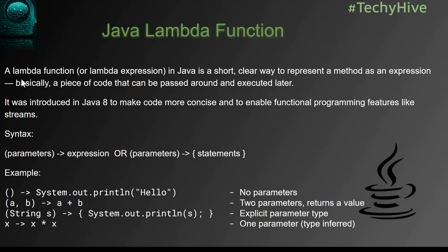A lambda function or lambda expression in Java is a short, clear way to represent a method as an expression — basically a piece of code that can be passed around and executed later. It was introduced in Java 8 to make code more concise and to enable functional programming features like streams. So Java 8 introduced functional programming, and as part of that, lambda expressions were introduced.